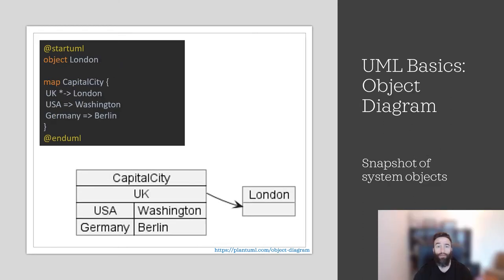An object diagram is a snapshot of the objects in a system at a point in time. Because it shows instances of classes rather than classes, an object diagram is often called an instance diagram. The map object capital city shows several objects — UK, USA, and Germany — and their respective capital city objects. The UK object consists of another object named London. Use object diagrams to show examples of objects connected together.